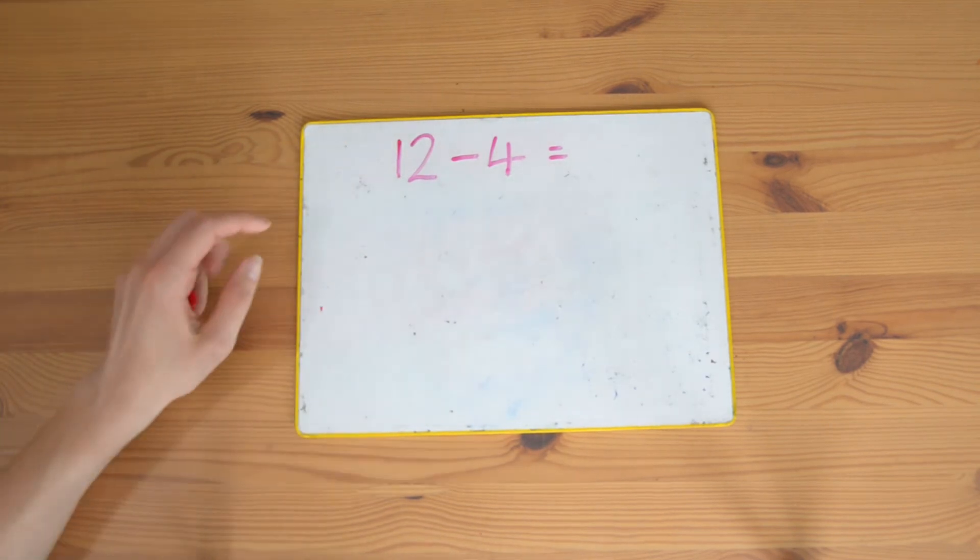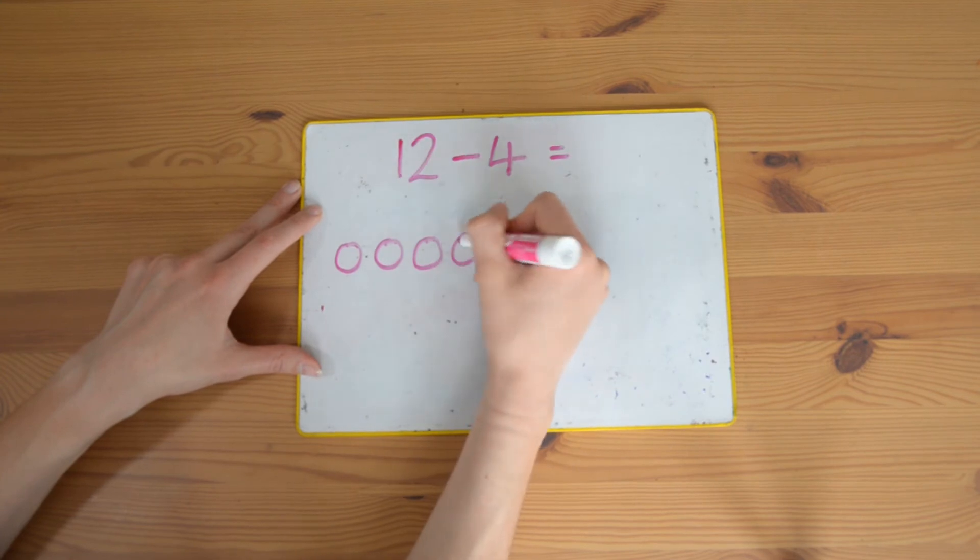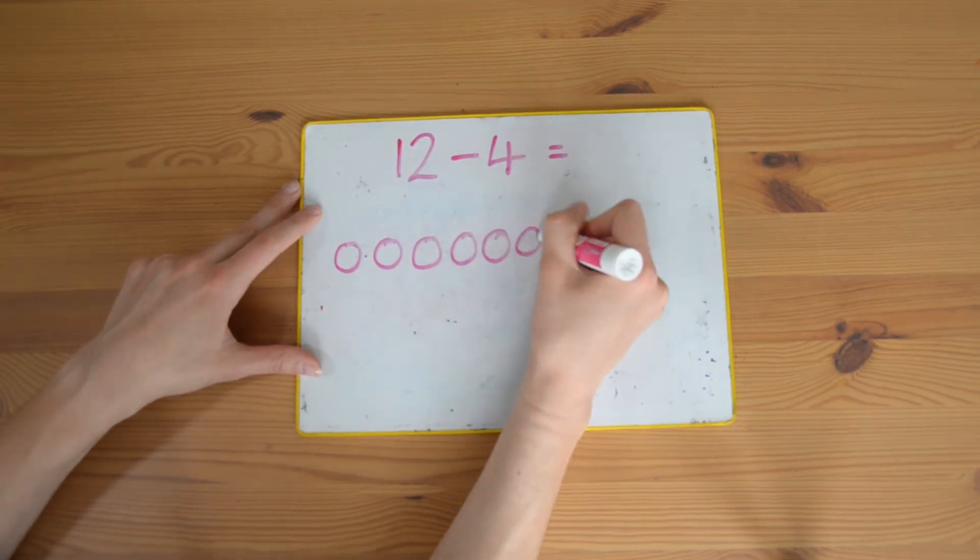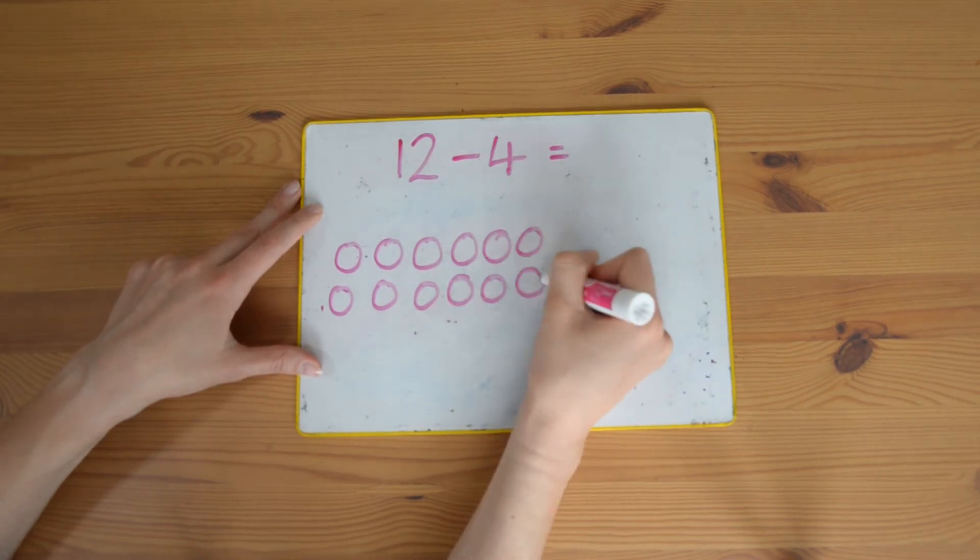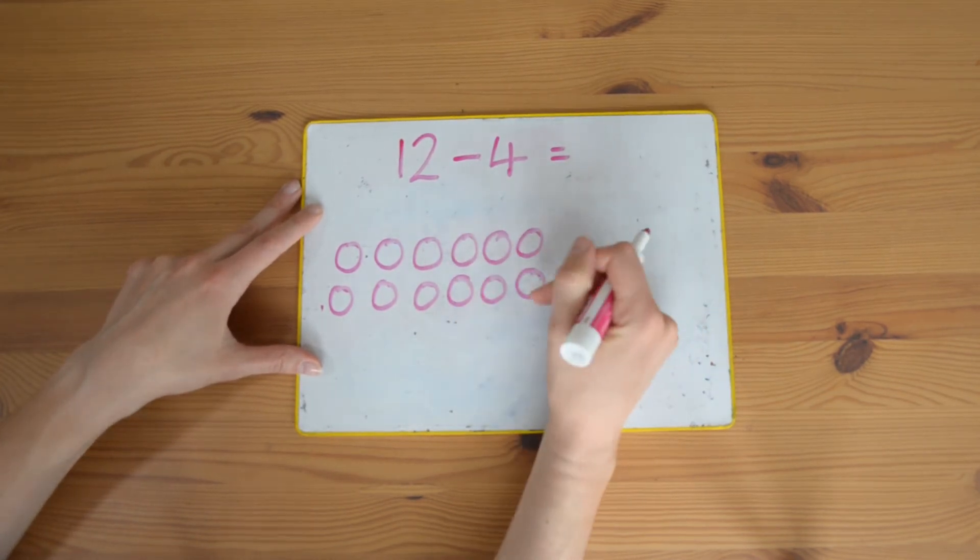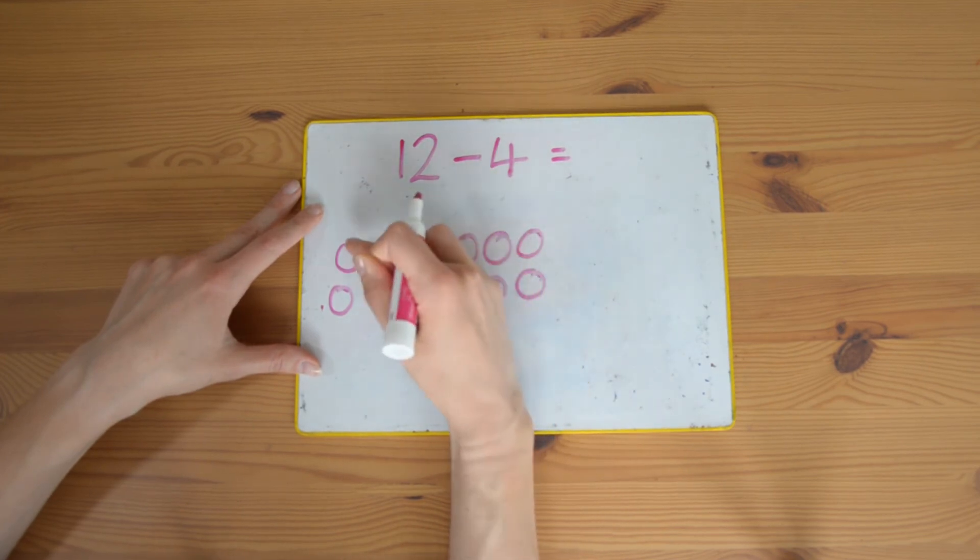I'm going to draw twelve circles. Because there's quite a lot I need to draw, I'm just going to draw something nice and easy: twelve circles. Remember, just double check: one, two, three, four, five, six, seven, eight, nine, ten, eleven, twelve.